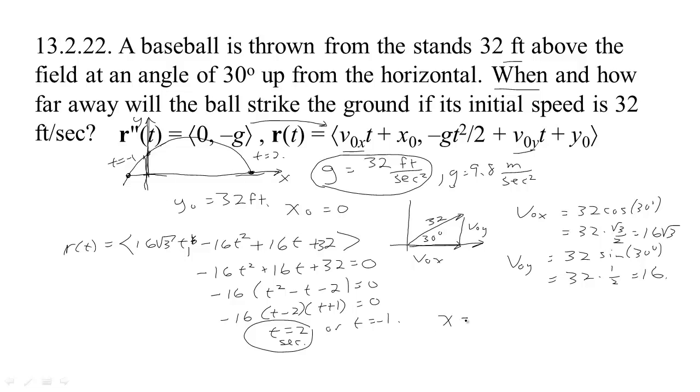Remember, our x-value as a function of t is 16 root 3 times the time. And so if the time is 2, then we get at time 2 we get 16 root 3 times 2 would be 32 root 3 feet.